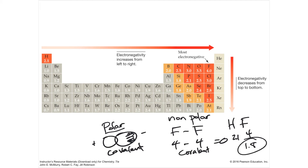For example, lithium and fluoride: fluoride is 4, lithium is 1, so 4 minus 1 is 3 — that's more than 1.7, so it's considered ionic. That means it's actually a transfer of electrons, not really sharing. It's like sharing your silverware with a thief — he's going to come in and take it and you're never going to have it again.